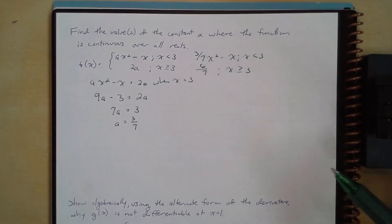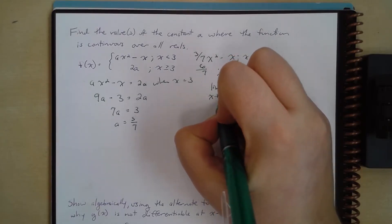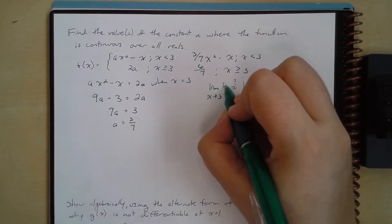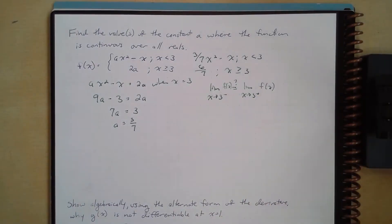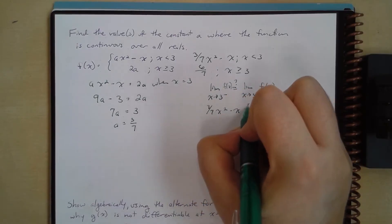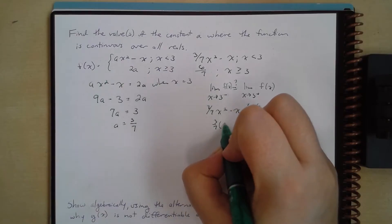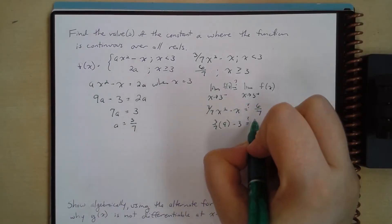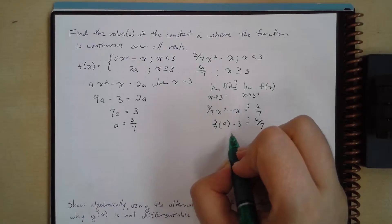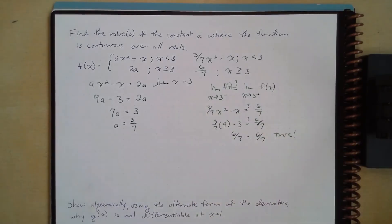So we found our value, but we need to actually verify it. We're asking: does the limit as x approaches 3 from the left equal the limit as x approaches 3 from the right? The limit from the left of 3 sevenths x squared minus x — substituting in 3 — gives 3 sevenths times 9 minus 3, which equals 27 sevenths minus 3, and I get 6 sevenths equals 6 sevenths. So this is true, and we found a constant that works.